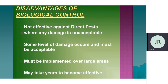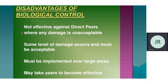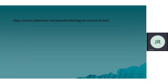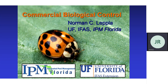Some disadvantages: biological control is not directly effective against all pests. Some level of damage will occur because it takes time. It must be implemented over large areas. Sometimes it takes more time to be effective — these are some of the disadvantages. Commercial biological control resources are available online for further detail.